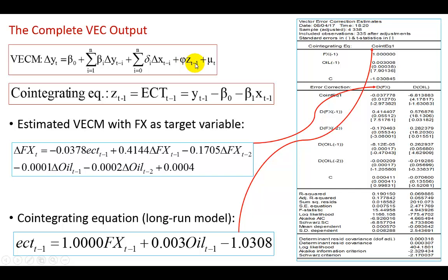So phi is negative 0.037, and Z(t-1) is your error correction term lagged one period. The first two terms refer to the lagged values of Y — you see the coefficient for the first lagged value and the second lagged value. Following that are the coefficients for the lagged values of X: oil lagged 1 and oil lagged 2. The last coefficient is the constant, your beta sub zero.